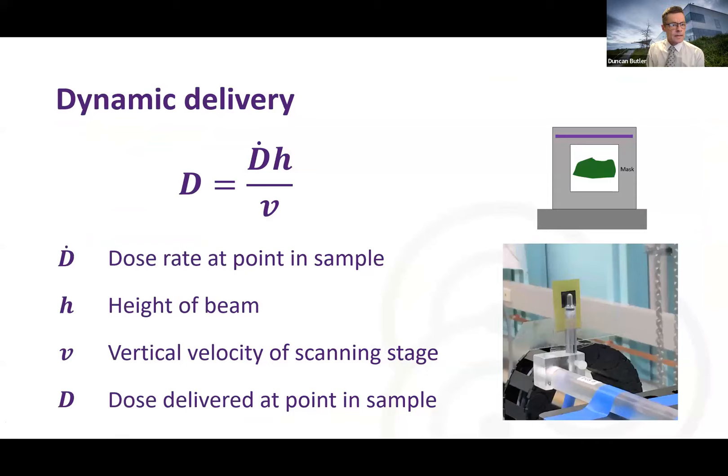So dynamic delivery. The dose everywhere in the field is given by the dose rate times the height of the beam, the static beam, divided by the velocity. It's pretty easy to work out this formula. It does make it a bit confusing when you're in there. The faster you scan, the lower the dose. It's a little bit of an inverse calculation. But this is the formula we use for doing dosimetry, relating the dose rate to the dose in the sample.